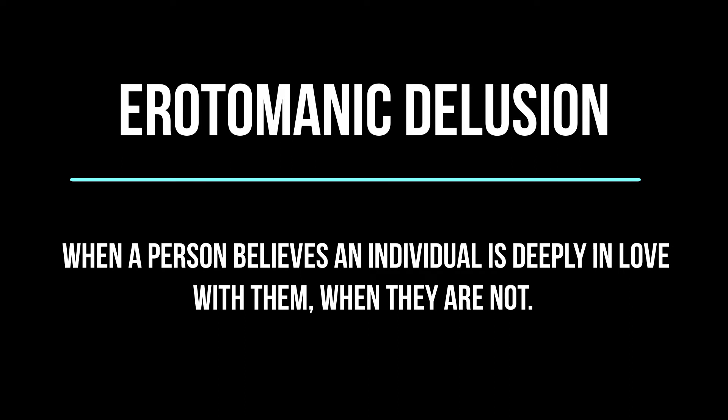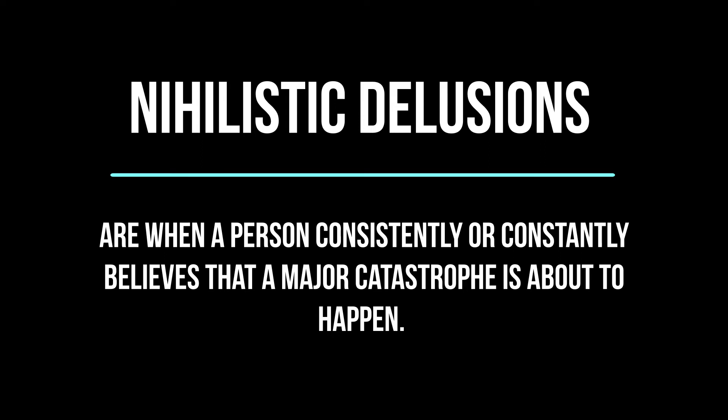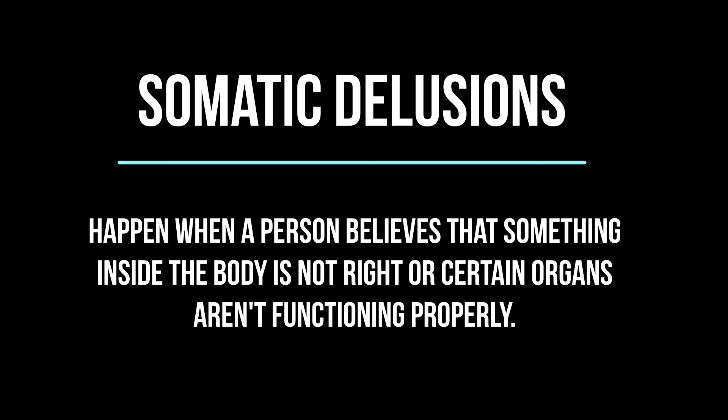An erotomanic delusion is when a person believes an individual is deeply in love with them when they are not, with no real evidence of feelings. A referential delusion happens when the individual believes that certain gestures or body language is meant toward them, even though there's no evidence of that. Nihilistic delusions are when a person constantly believes that a major catastrophe is about to happen — such as the sun exploding, nuclear war, or a deadly disease outbreak. Somatic delusions happen when a person believes that something inside the body is not right or that certain organs are not functioning correctly, even without evidence.